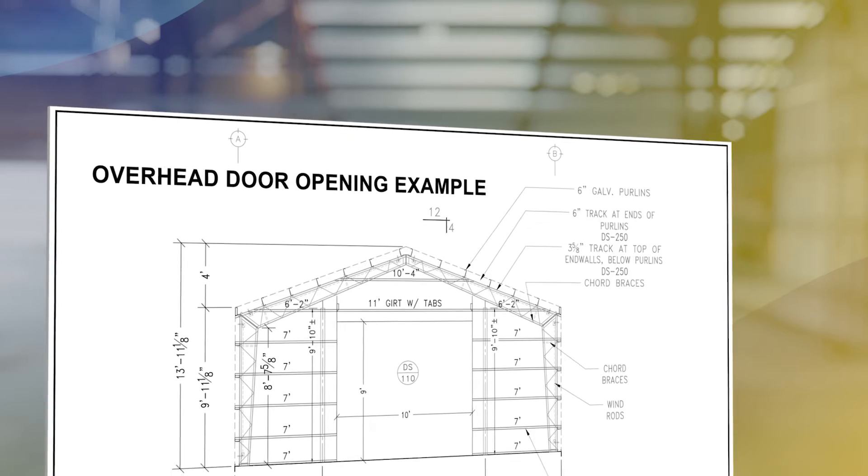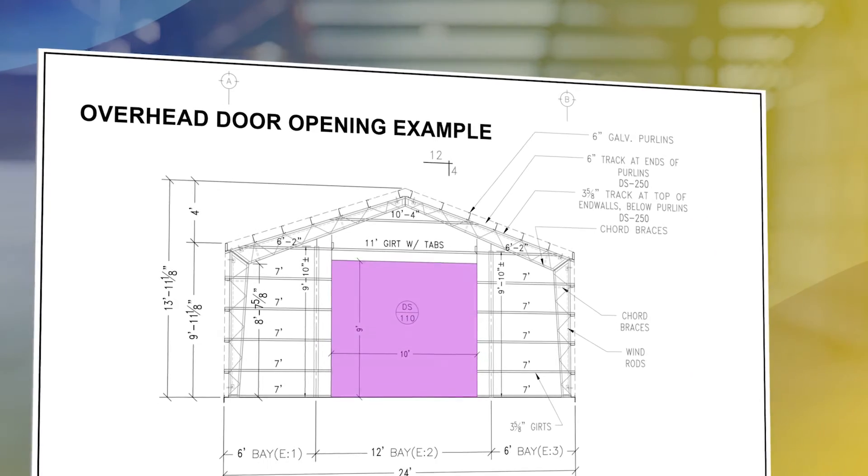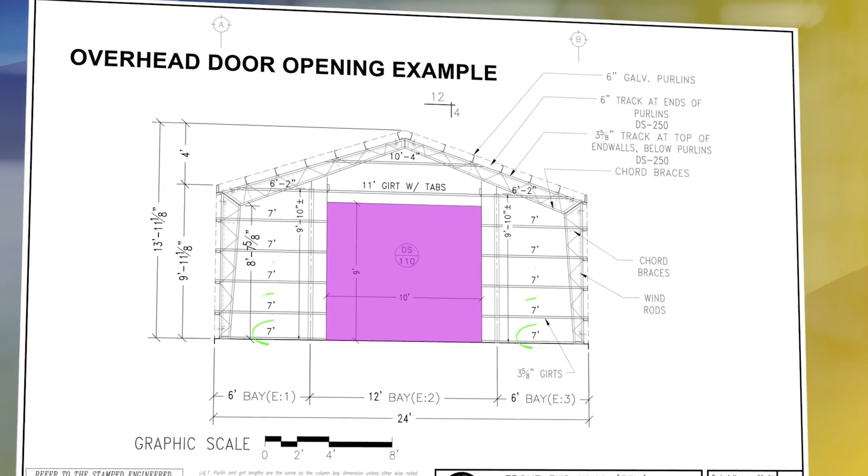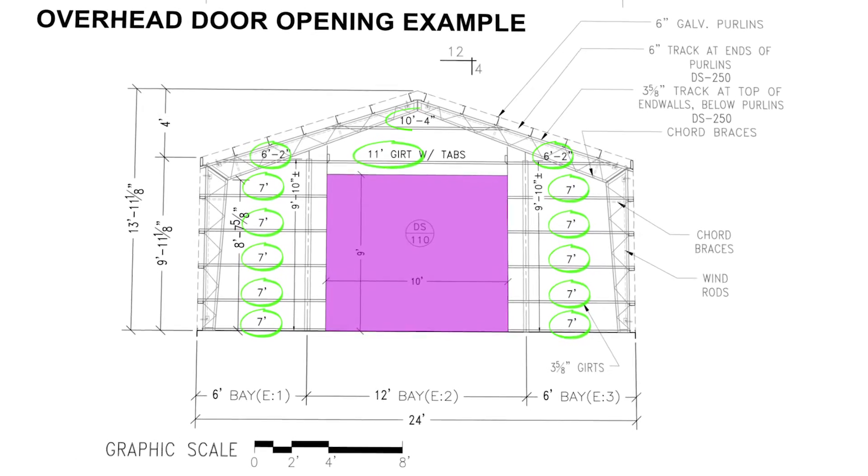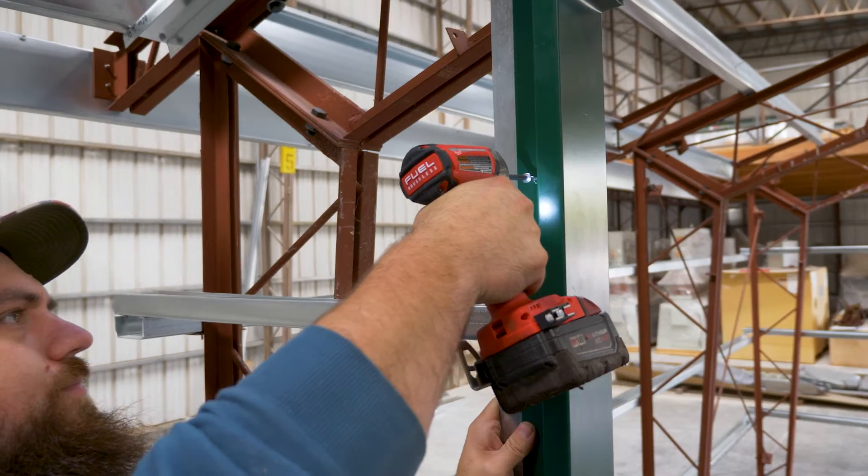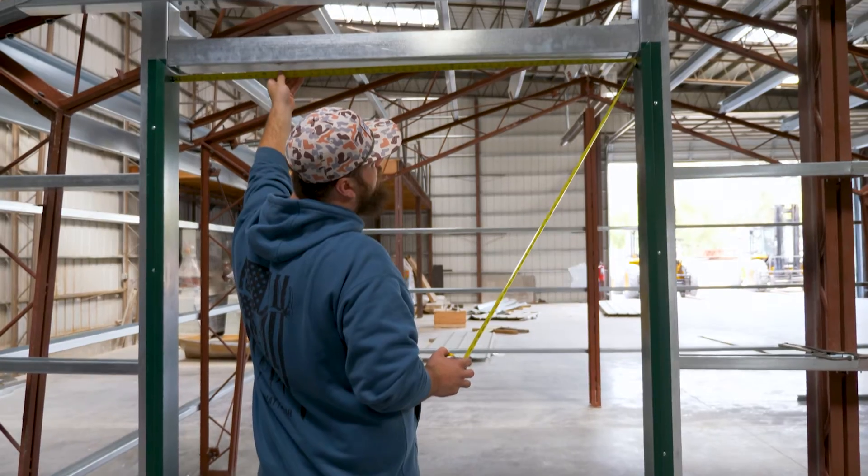If you have an overhead door framed opening in your walls, then the length of the girts necessary to install will be shown on your W drawings. Refer to our overhead door framing installation video for additional information.